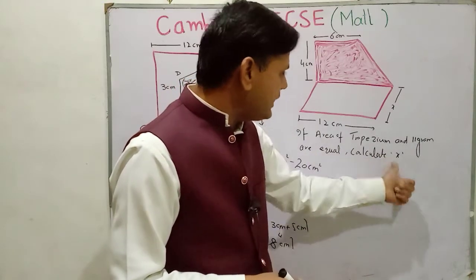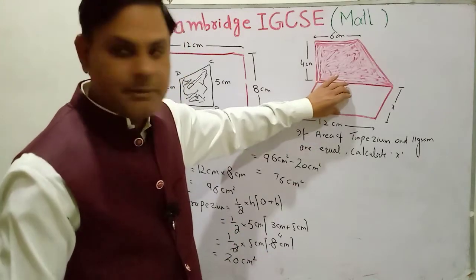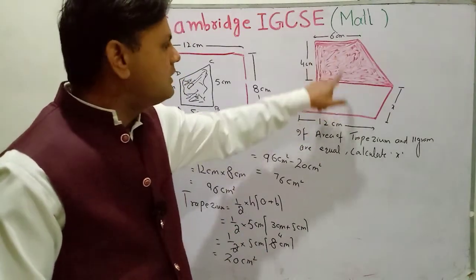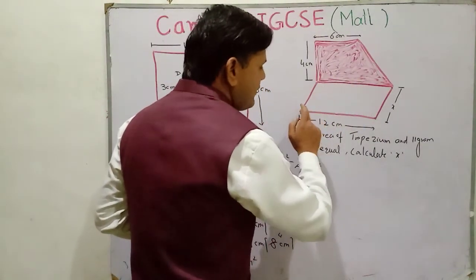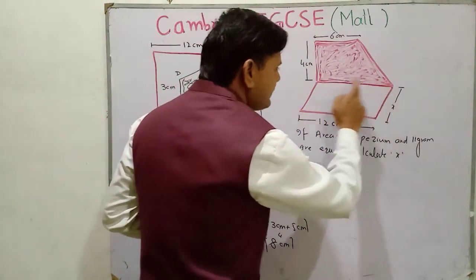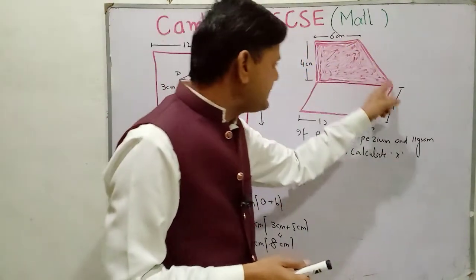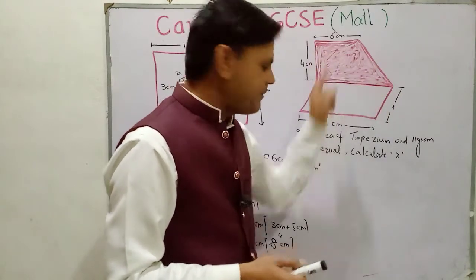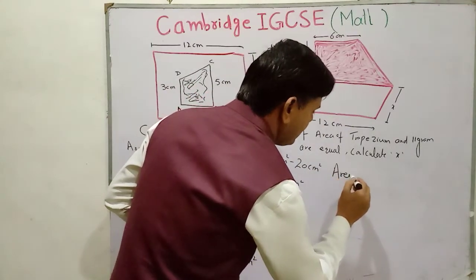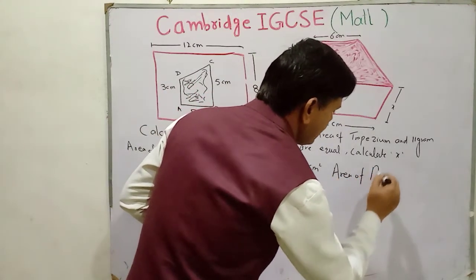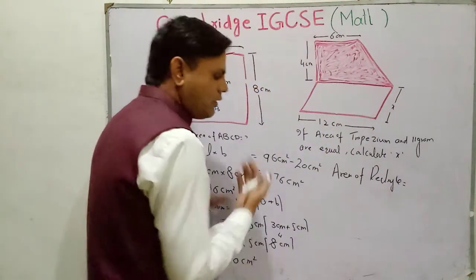The second question: if the area of the trapezium and the rectangle are equal, then calculate x. There are two shapes — one is a rectangle and the second is a trapezium. First, find the area of the rectangle, then find the area of the trapezium.